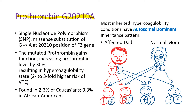There is also a mutated gene of prothrombin caused by a single nucleotide polymorphism. This mutated prothrombin gene, prothrombin G20210A, is a gain-of-function mutation. It can increase prothrombin synthesis by 30%, resulting in a hypercoagulability state. It is more common in Caucasians and rare in African Americans.